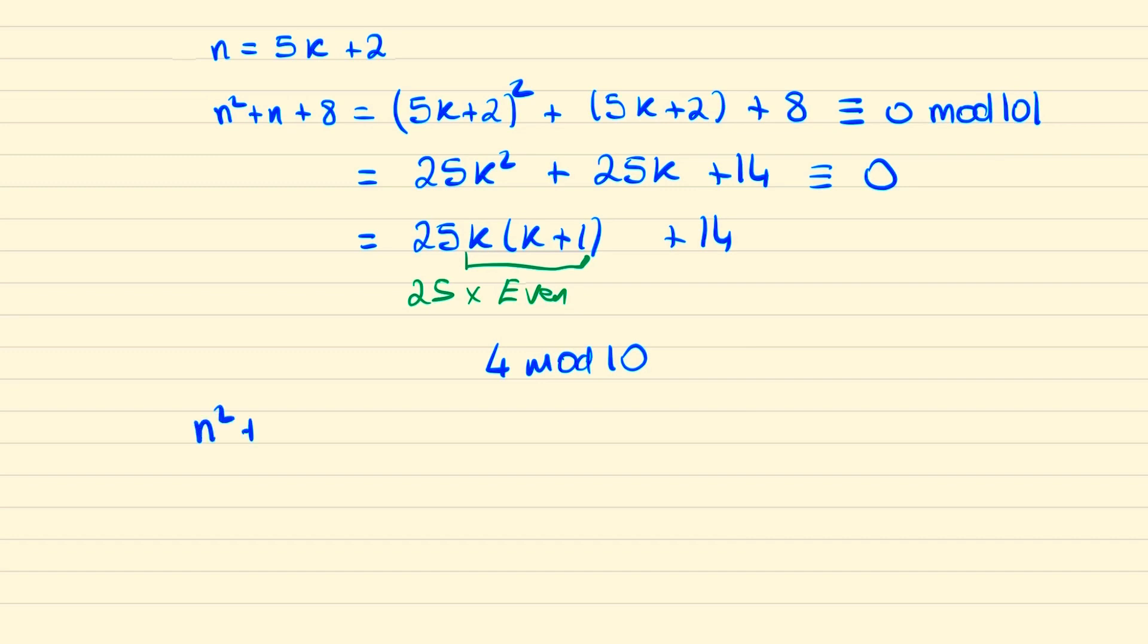So thus we're saying that if n squared plus n plus 8 equals 101 times m for some integer m then it must be 4 mod 10. But that can only be true when the values of m are either 4, 14, 24 and so on.